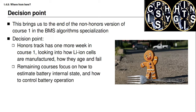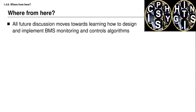Whether you decide to take the honors track or not, you may proceed to the remaining courses in the specialization, which focus on how to estimate the battery internal state and how to control battery operation. If you decide to follow the honors track, there's one more week, and I do encourage you to at least take a look at it — I think you'll learn some things that are quite valuable and quite interesting. After that, you move into course two of the specialization, and all future discussion moves towards learning how to design and implement battery management system monitoring and control algorithms.